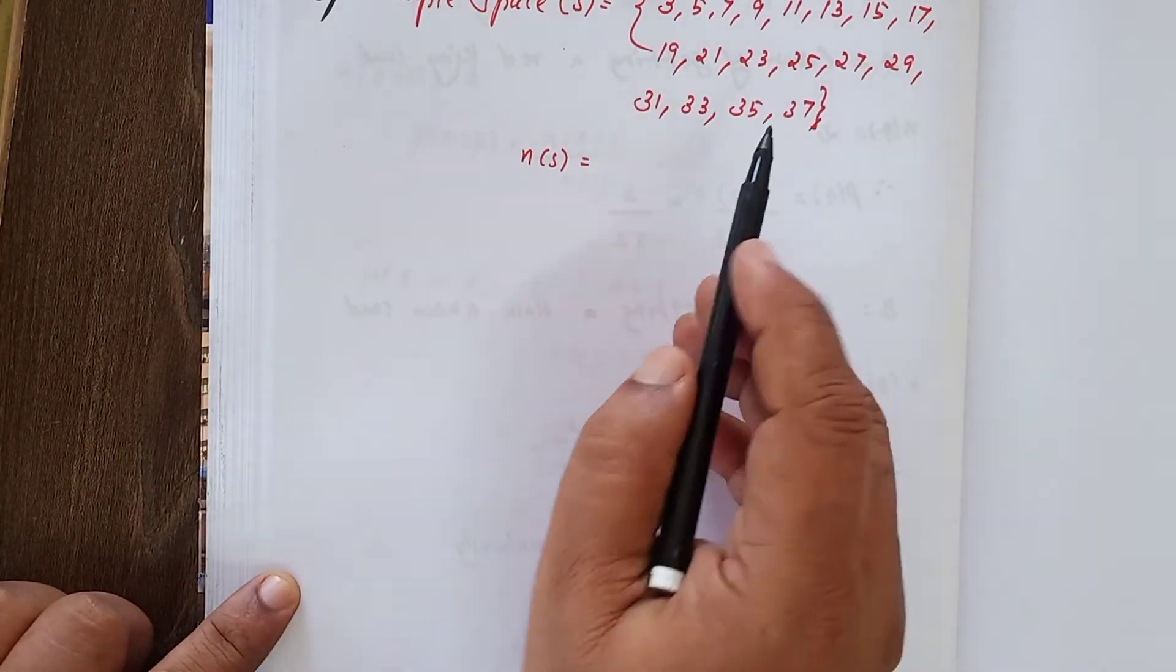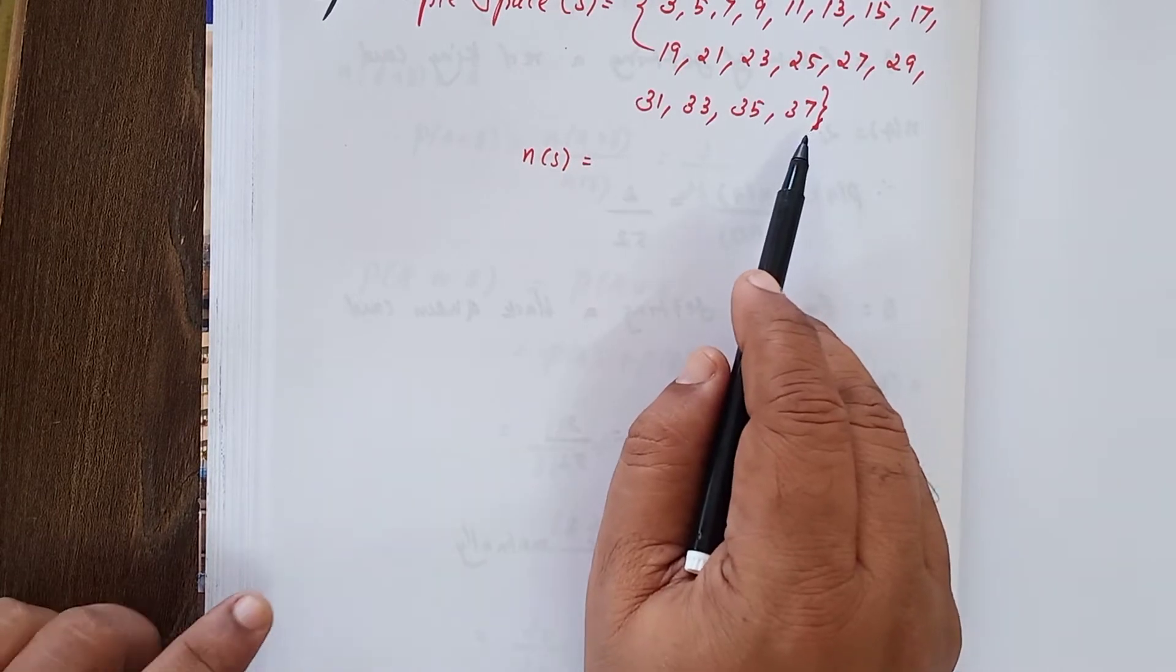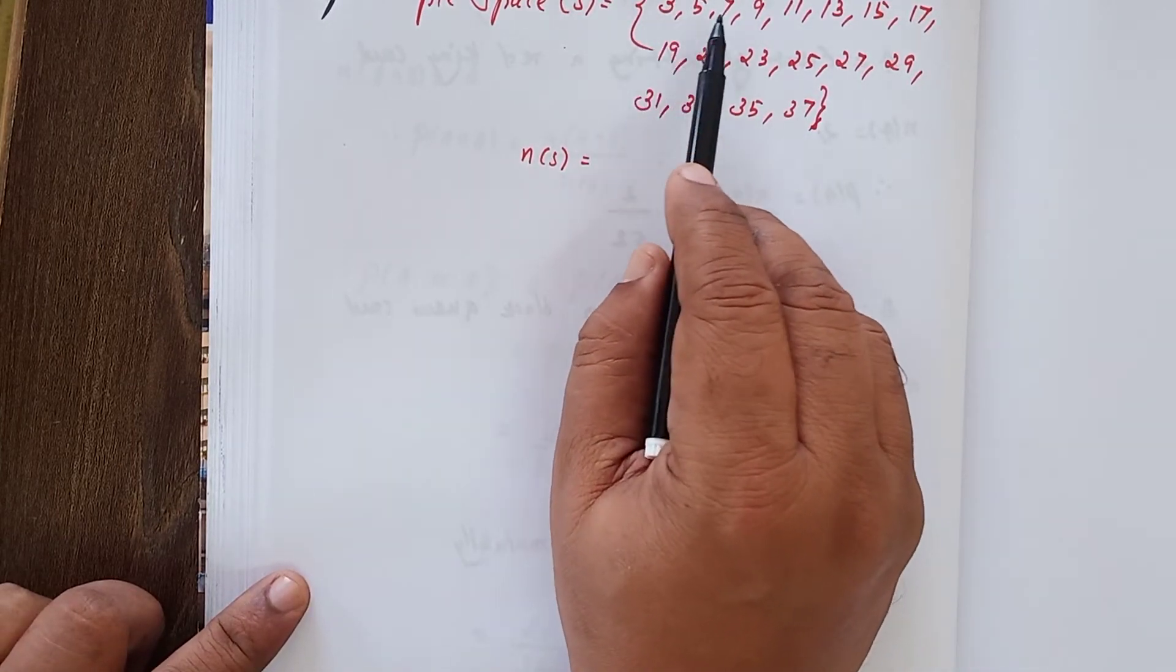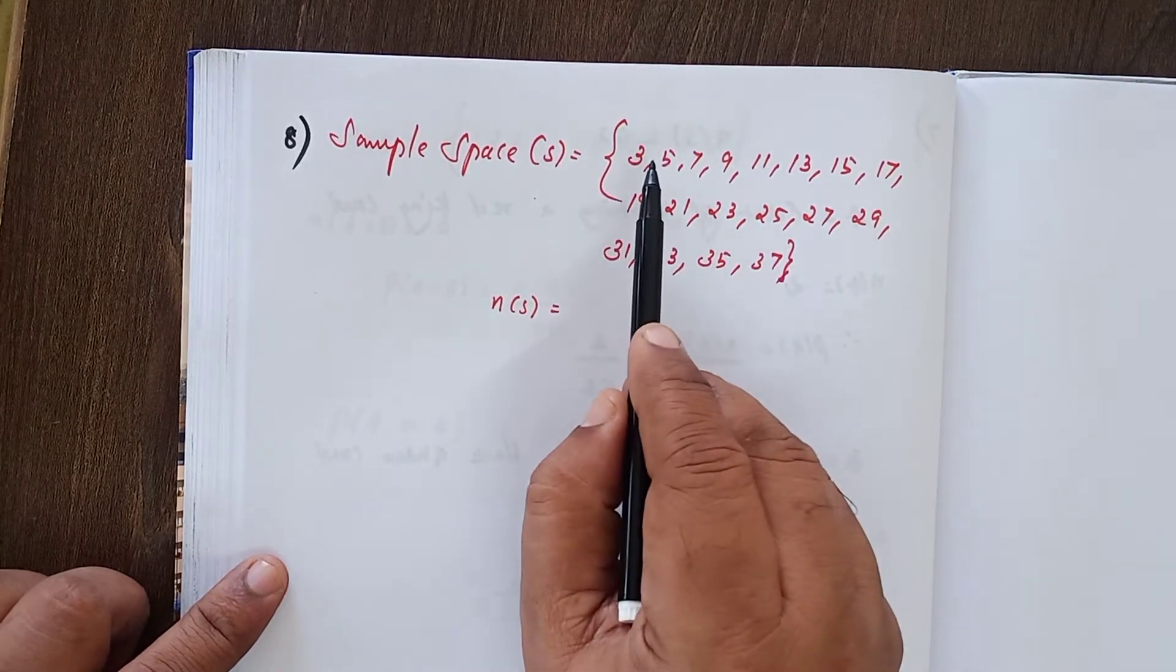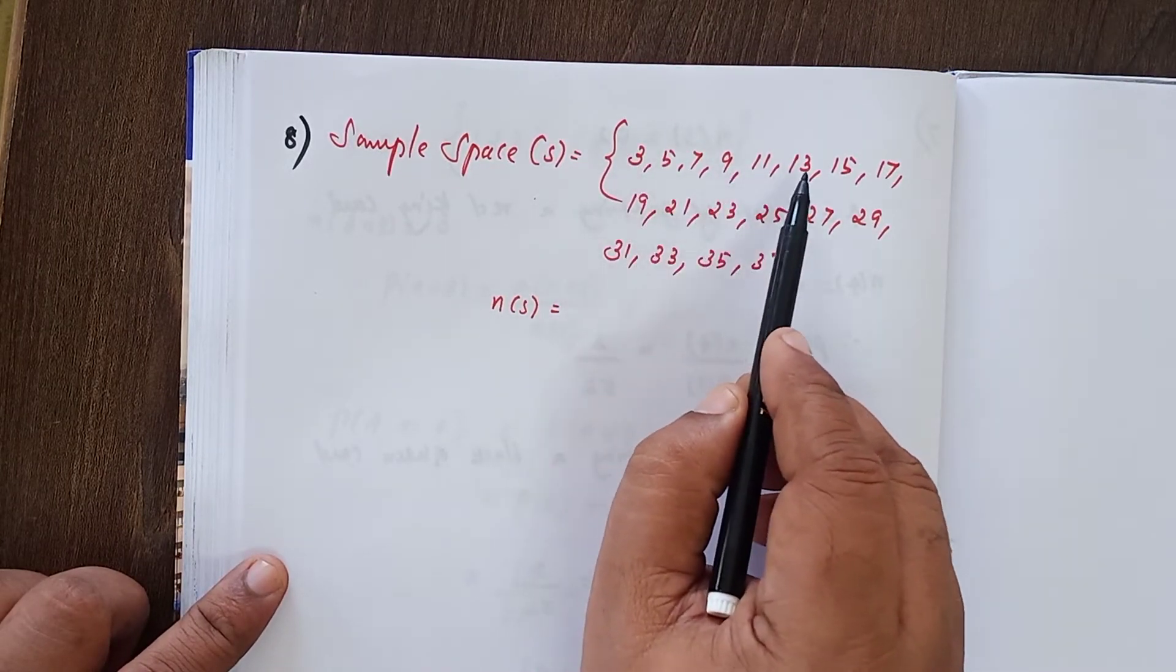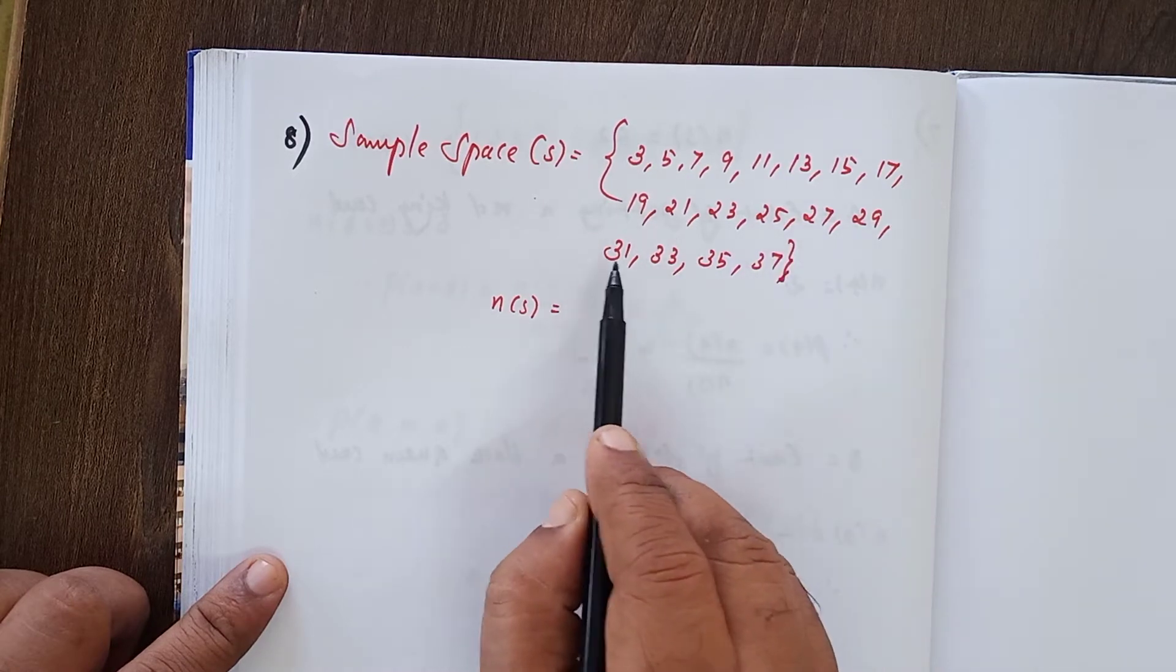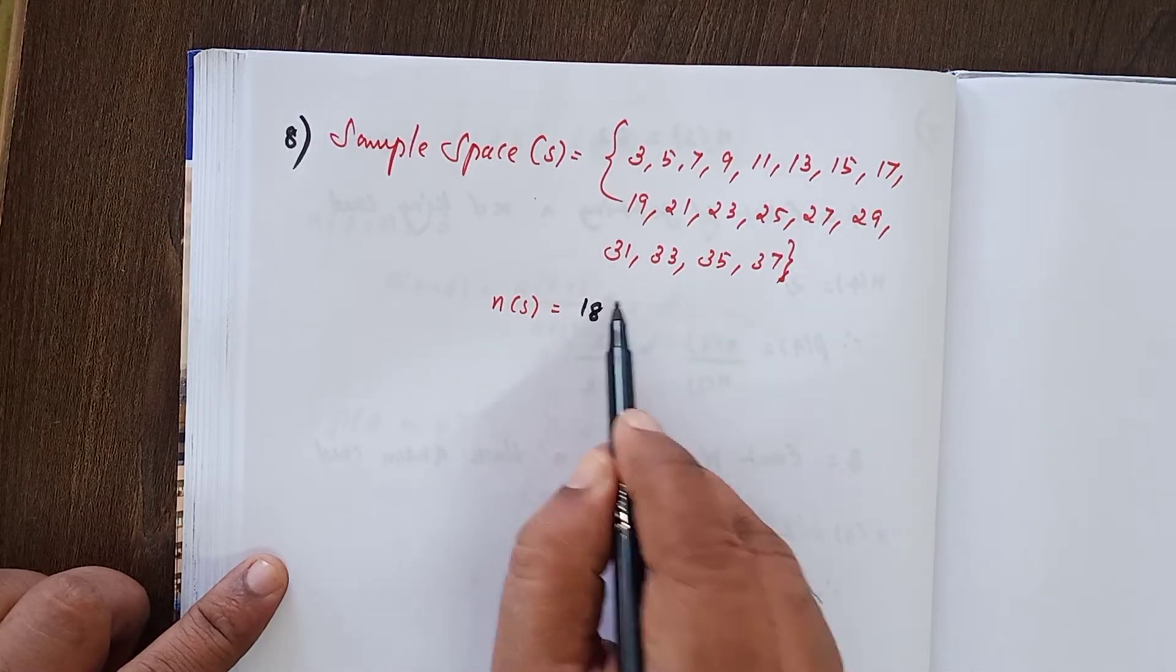Now sample space: I have written 3 to 37, all odd numbers. We can count 1, 2, 3, 4... 3 to 37: 1, 2, 3, 4, 5, 6, 7, 8, 9, 10, 11, 12, 13, 14, 15, 16, 17, 18 numbers are there.